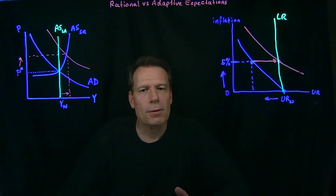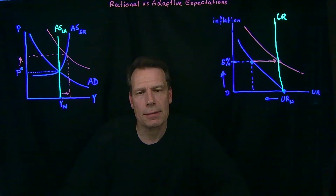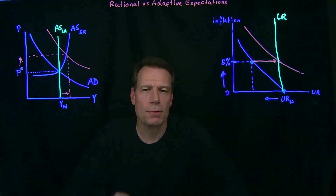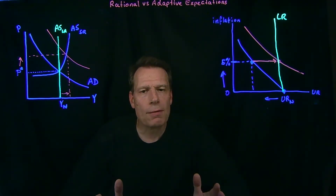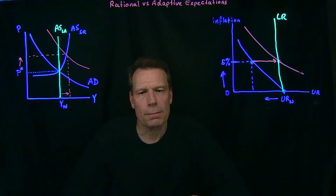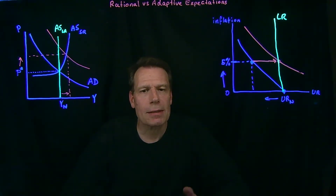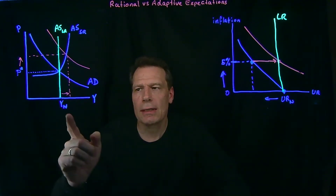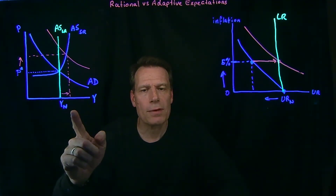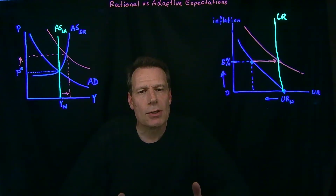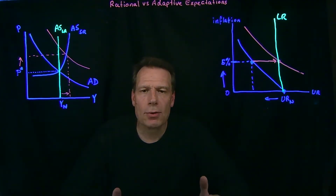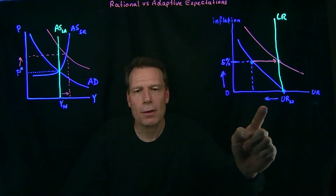We can now realize that there is a version of the aggregate demand and aggregate supply graph that has inflation on the vertical axis, and that version looks very similar to this version. But once we have inflation on the vertical axis rather than the price level, the two graphs become exact mirror images of one another. They both have inflation on the vertical axis, and the graph on the left says that expansionary policy can cause a temporary increase in GDP above the natural level, but at the cost of ending up with higher inflation in the long run.